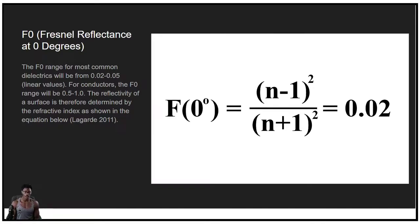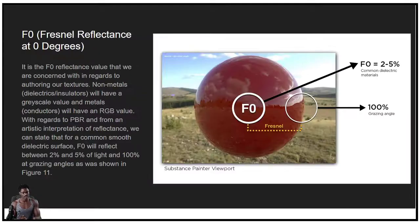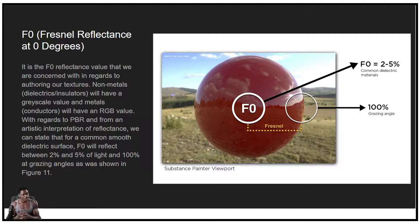The amount of light refracted into the surface is referred to as one minus F0. The F0 range for most common dielectrics will be from about 0.02 to 0.05, which is a linear value. For conductors — metals — the F0 range will be from about 0.5 to 1. The reflectivity of a surface is determined by the refractive index. Different objects have different IORs. When I first did this stuff, we had to have a sheet with all the IORs and F0 values — you can find lists online. It's the F0 reflectance value we are concerned with when authoring our textures. Non-metals, dielectrics or insulators, will have a grayscale value; metals, conductors, will have an RGB value.